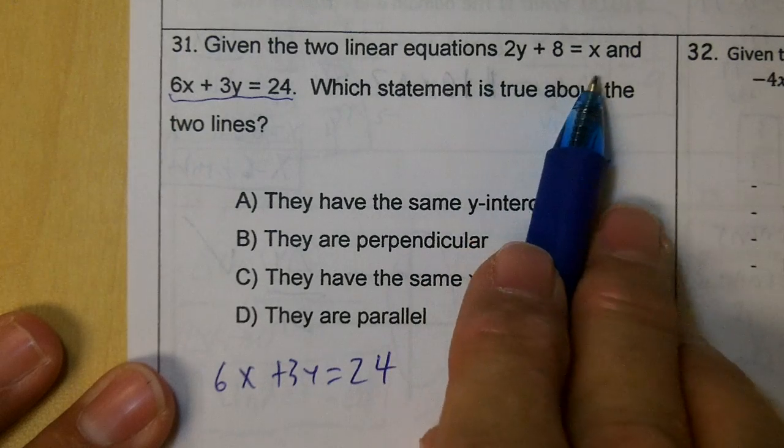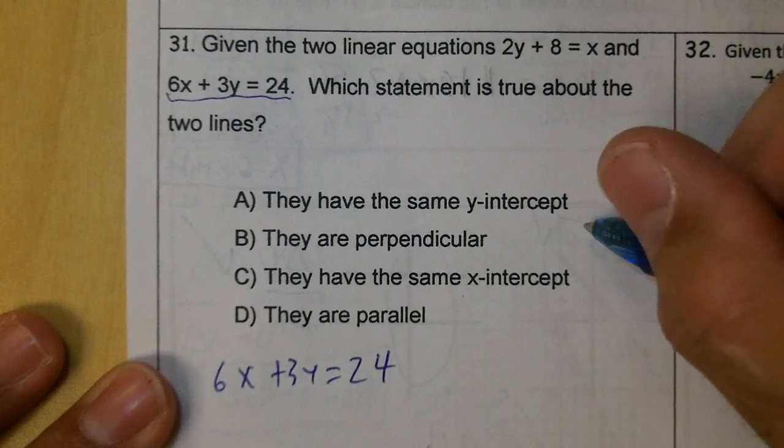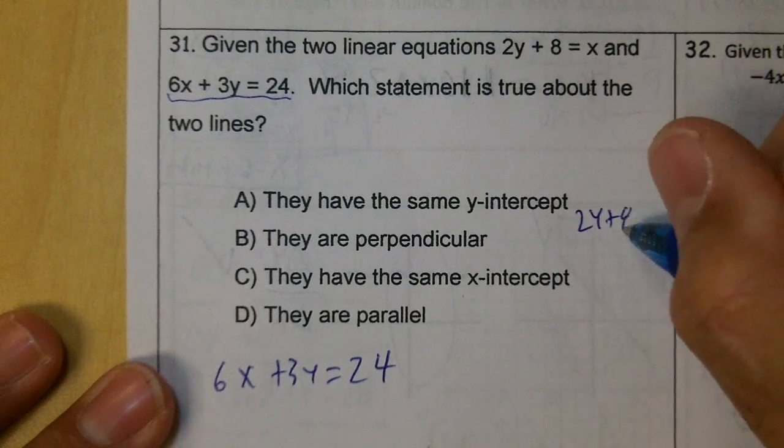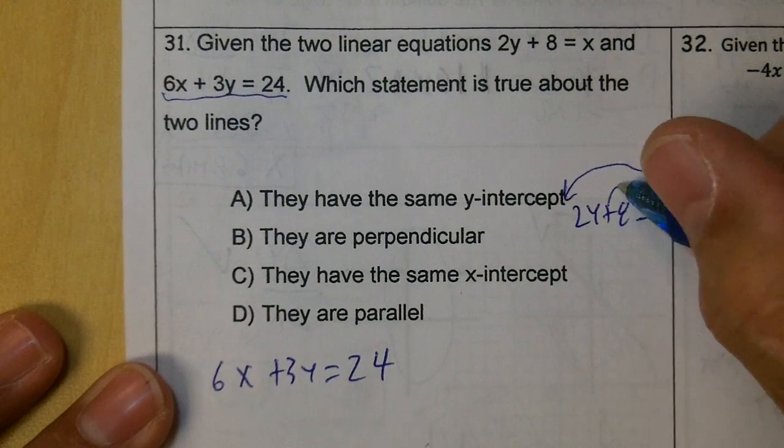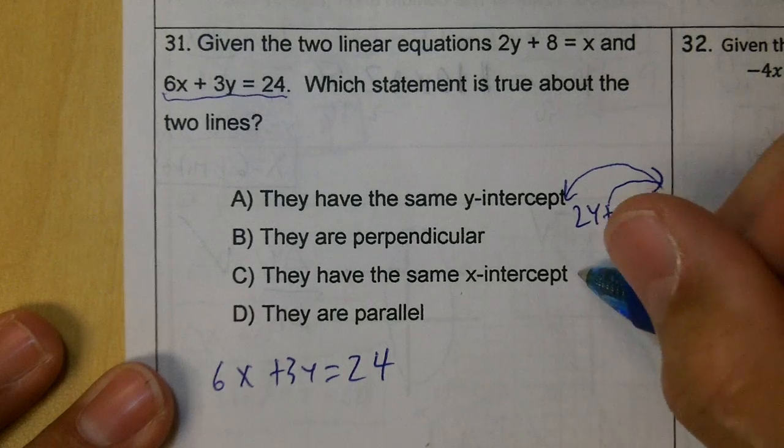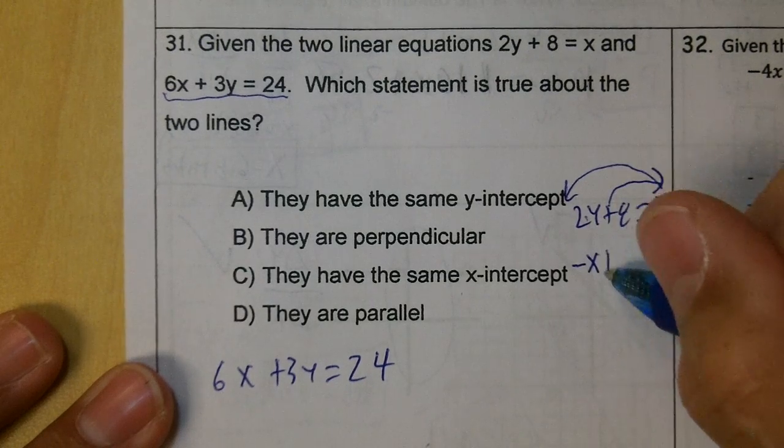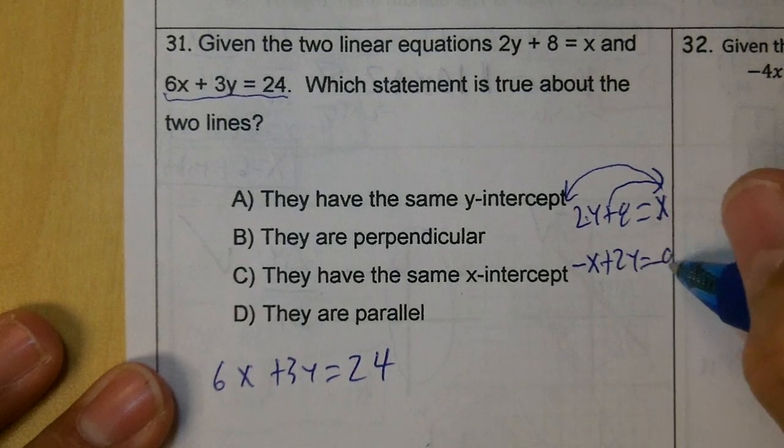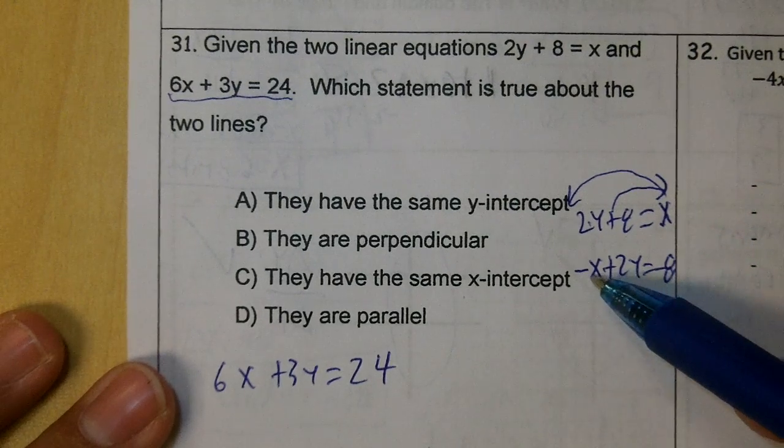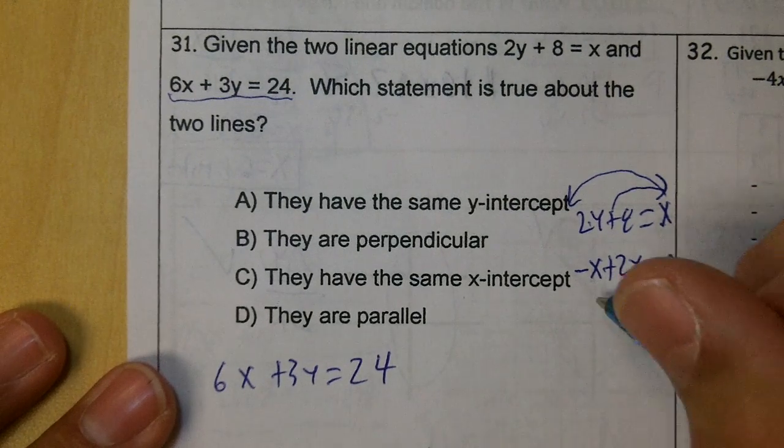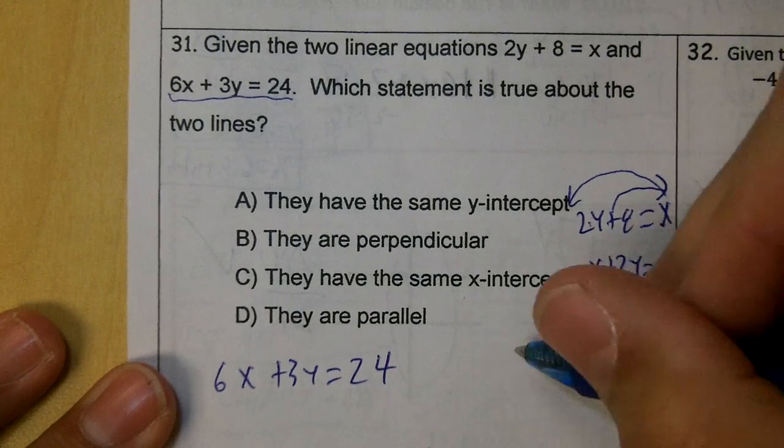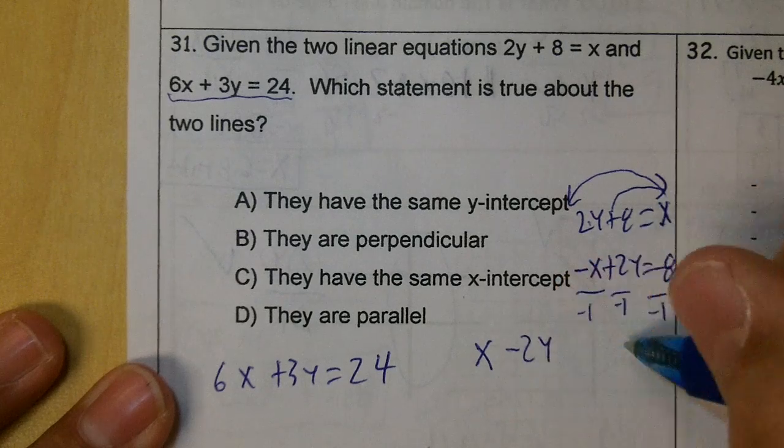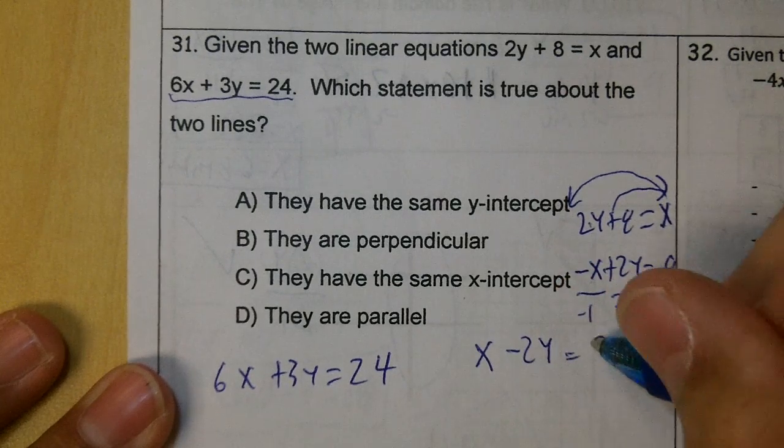This one is almost standard form. So let's write down 2y plus 8 equals x. We need to move the x to the left and the 8 to the right. When you do this, the x turns negative and the 8 turns negative. Now then, you can't have a negative x in standard, so we're going to divide everything by negative 1. And we'll get x minus 2y equals 8.